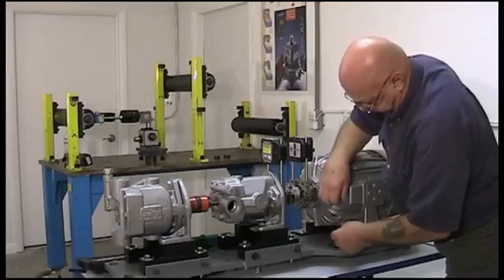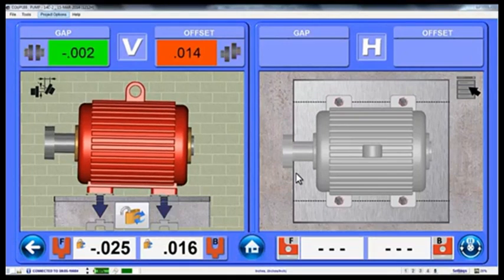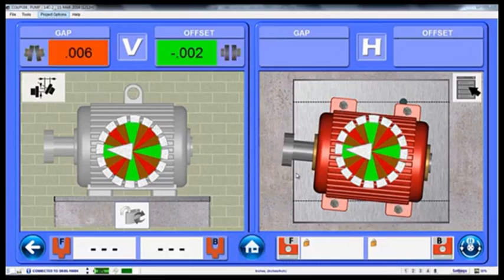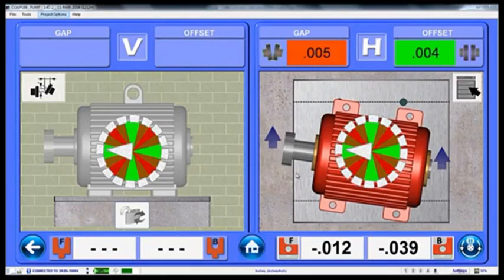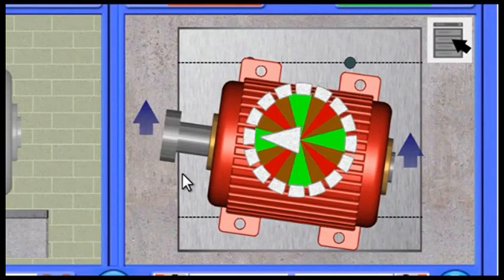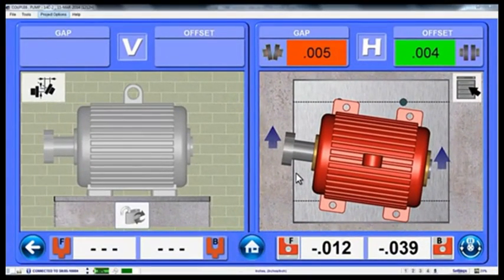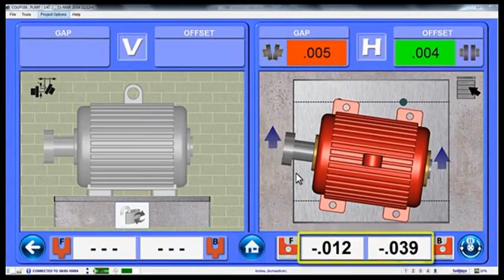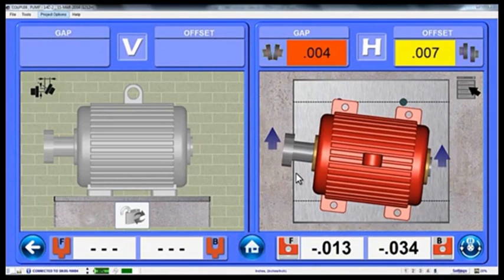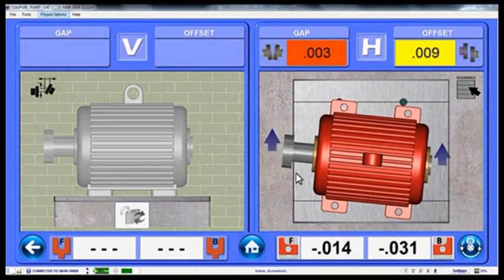To align the motor, first you add the shim. Notice how the vertical gap offset values and the motor image update as you insert the shim. After that, rotate to 3 o'clock or 9 o'clock and Couple 6 automatically switches to the horizontal alignment plane, without having to retake data. Notice as we rotate the shafts, an indicator icon tells you the shaft rotation position. The amount you need to move the motor is shown as foot values at the bottom of the screen. Move the motor in the direction as shown by the arrows until the color coded display turns either yellow or green.